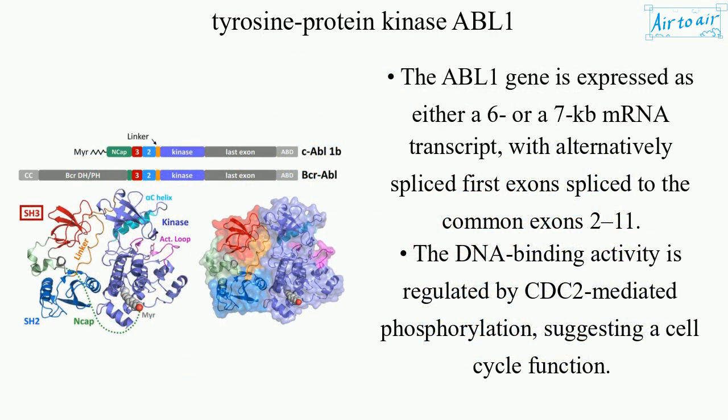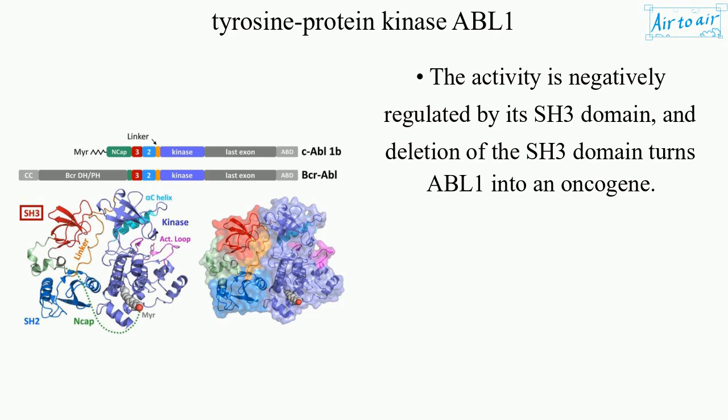The ABL1 gene is expressed as either a 6 or 7 kb mRNA transcript, with alternatively spliced first exons spliced to the common exons 2 to 11. The DNA binding activity is regulated by CDC2-mediated phosphorylation, suggesting a cell cycle function. The activity is negatively regulated by its SH3 domain, and deletion of the SH3 domain turns ABL1 into an oncogene.